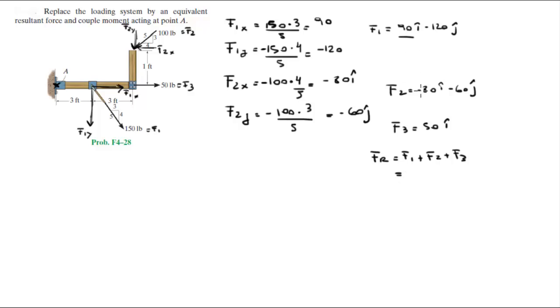When you basically add the i's with the i's and the j's with the j's, there's no j in this one, you're going to get the Cartesian vector form of the resultant force, which comes out to be 60 in the i minus 180 in the J.